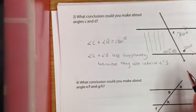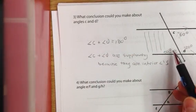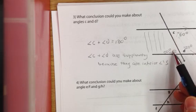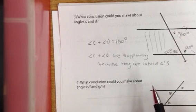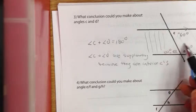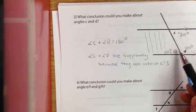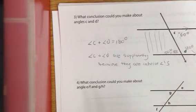So, it doesn't ask us in this question, but if you were trying to figure out what angles C and E were, you could say that angle E and angle C are equal because they're alternate interior. You could also say that angle E and angle D are supplementary because they're both interior angles.